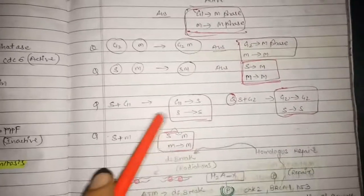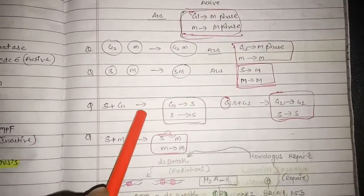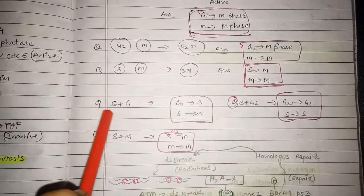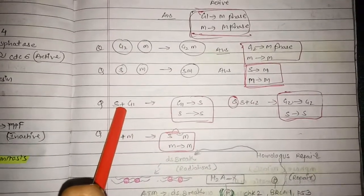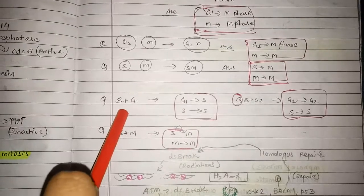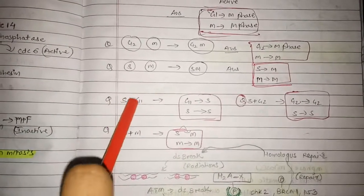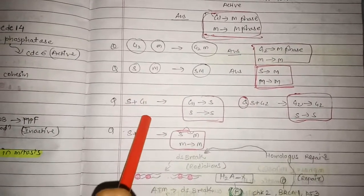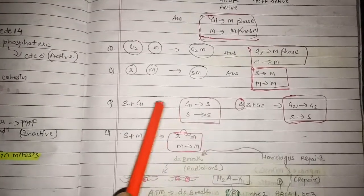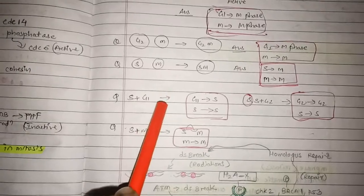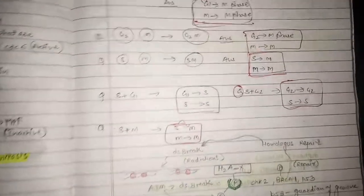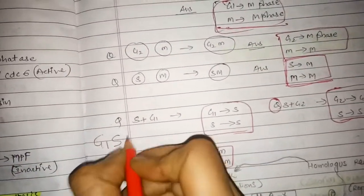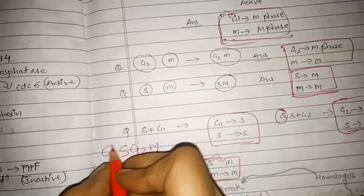Now let us look at another condition: S plus G1. When the cell is in G1, all the factors which are responsible for replication are present because one cell is in S phase. So after G1, S phase comes. The cell which is in G1 phase will enter into S phase, and the cell which is in S phase will remain in S phase itself. The sequence is G1, S, G2, M — so the cell will go into the next phase.